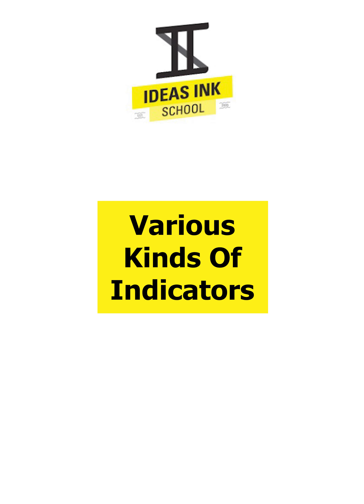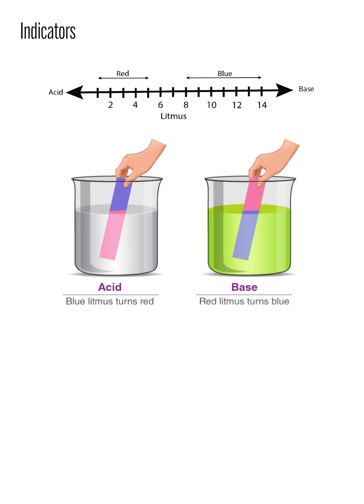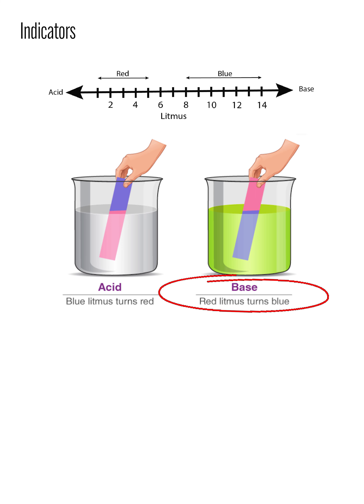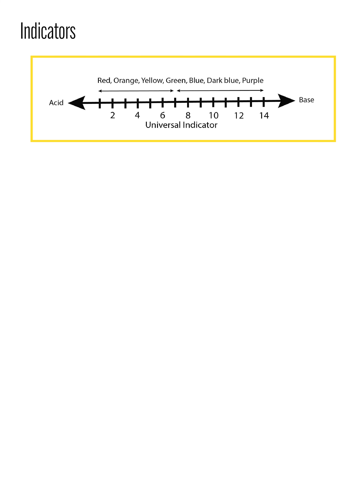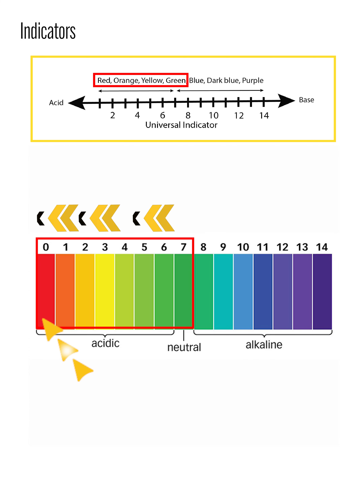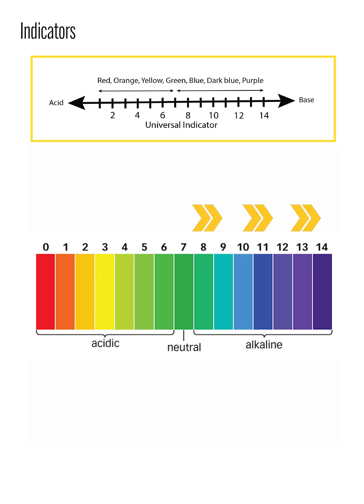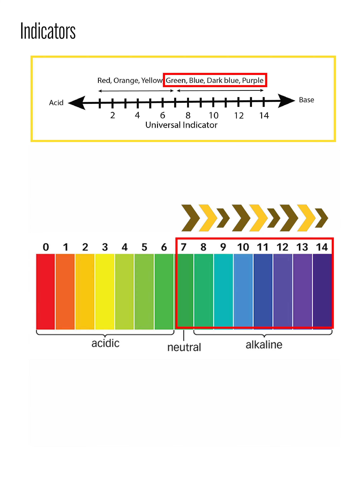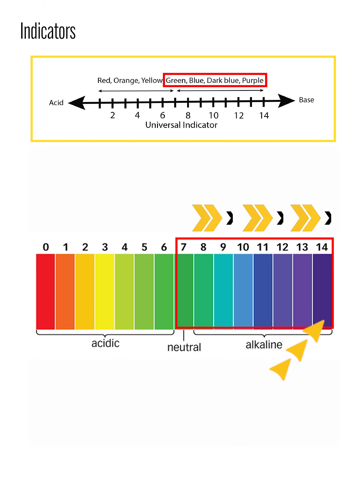In the next part of the chapter, we will be talking about the various kinds of indicators. We have already heard about litmus paper. Litmus solution will turn red in acidic pH ranges and turn blue in alkaline pH ranges. The next popular indicator is the universal indicator. This indicator will change color depending on the pH levels. In a neutral environment, the indicator turns green. As the pH decreases from 7 to 1, the color changes from green to yellow to orange and finally red, which indicates a very strong acid. But as the pH increases from 7 to 14, the color changes from green to blue to a darker blue and finally purple, which indicates a very strong alkali.